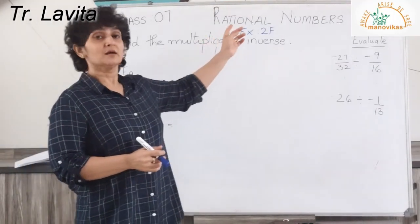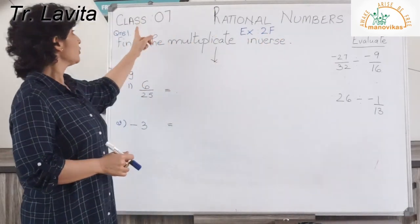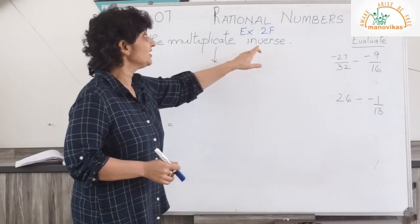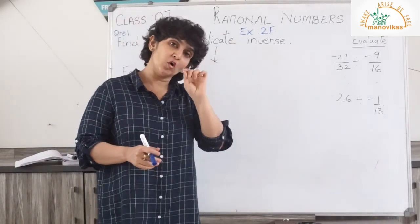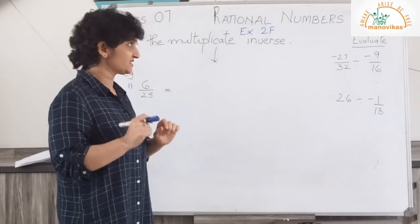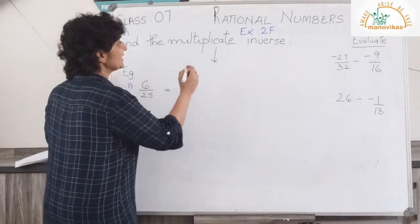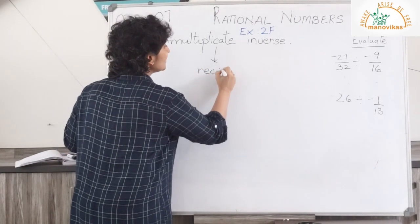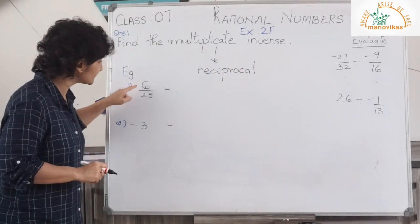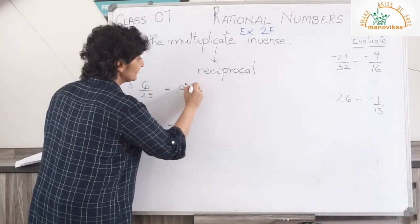Welcome back students. We begin with rational numbers exercise 2F for class 7. The first question asks us to find the multiplicative inverse. You're already familiar with the word inverse — inverse means opposite. In multiplicative inverse, we do the reciprocal of that number. For example, I have 6 upon 25, so my answer will be 25 upon 6.